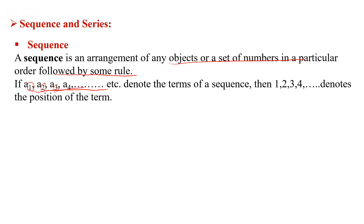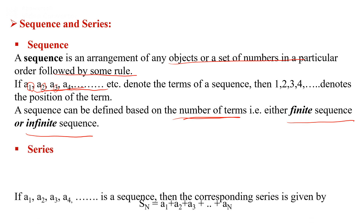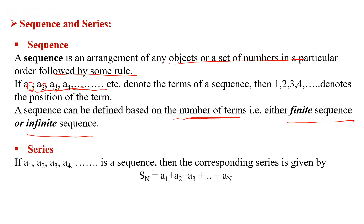A sequence can be defined based on the number of terms — it is either finite, called a finite sequence, or infinite, called an infinite sequence. Now, what is a series? If a1, a2, a3, a4, and so on is a sequence, then the corresponding series is given by a1 plus a2 plus a3 and so on, meaning we apply an operation between elements of the sequence.